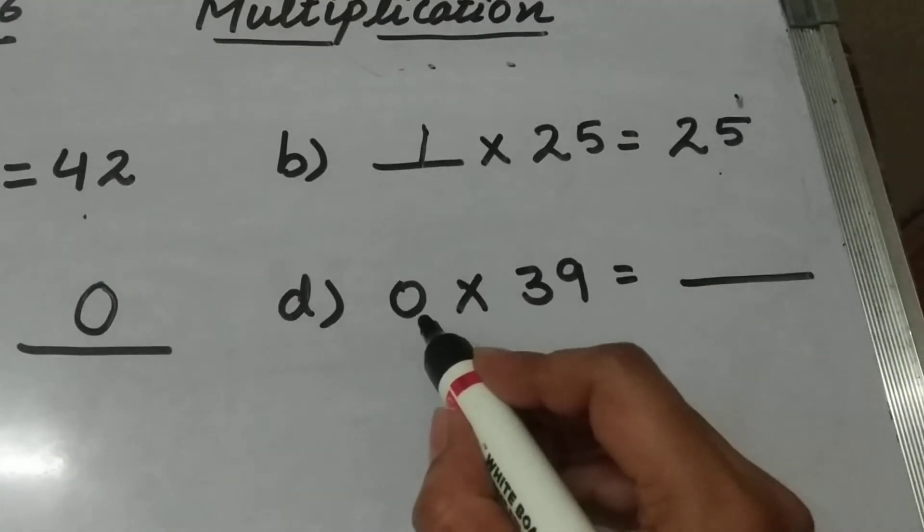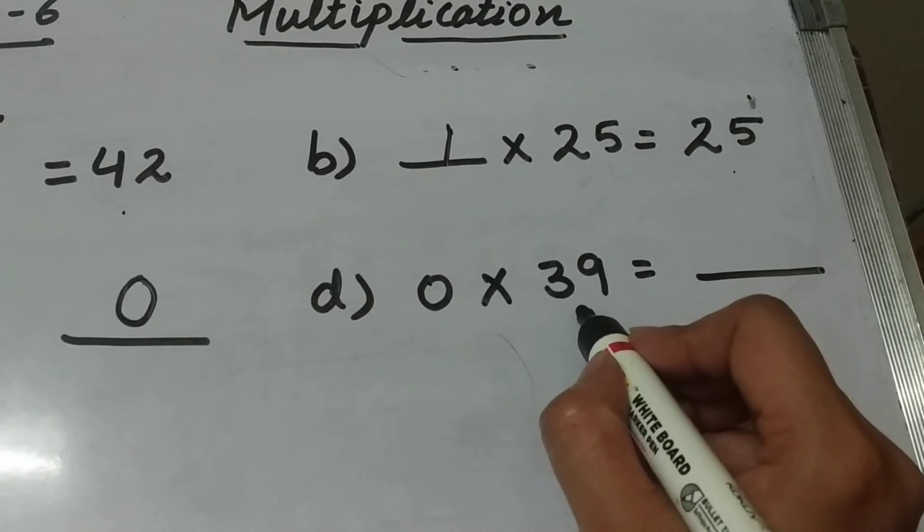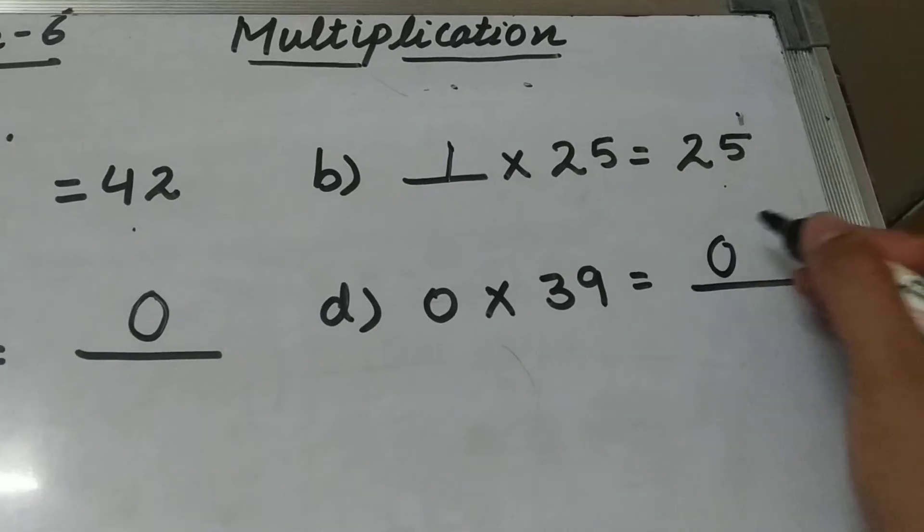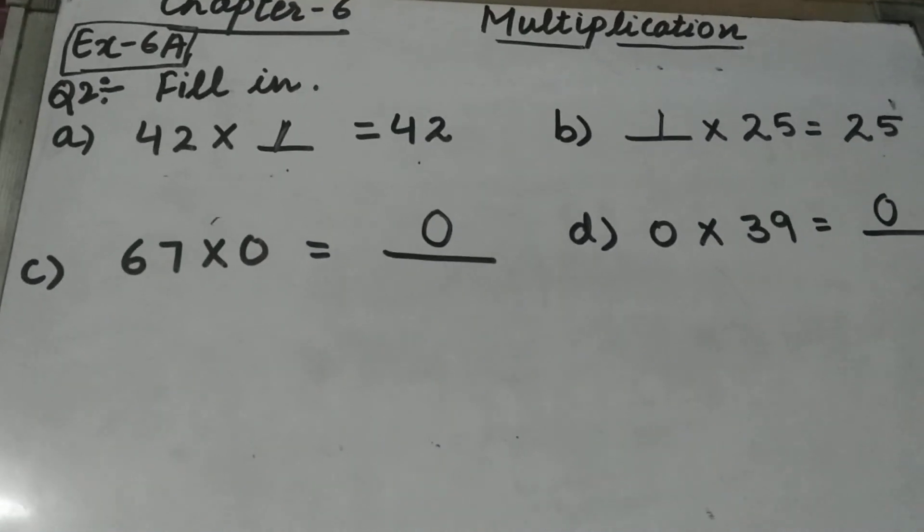In part D, 0 multiplied by 39. When we multiply a number by 0, we get 0. So this is our question number 2.